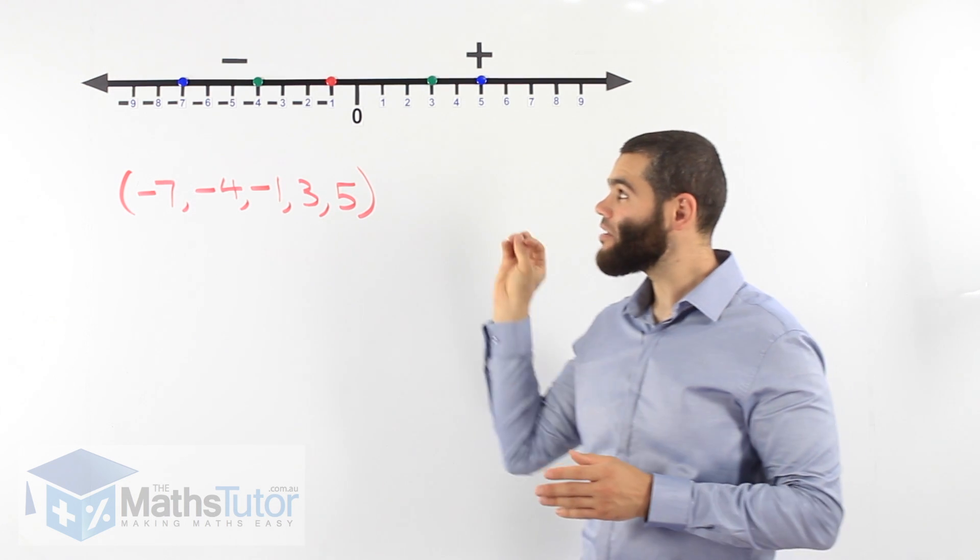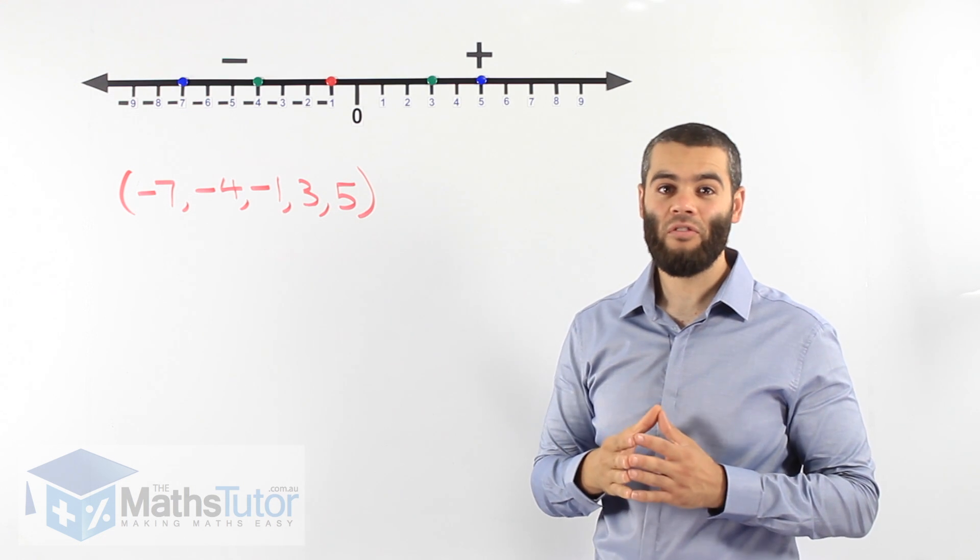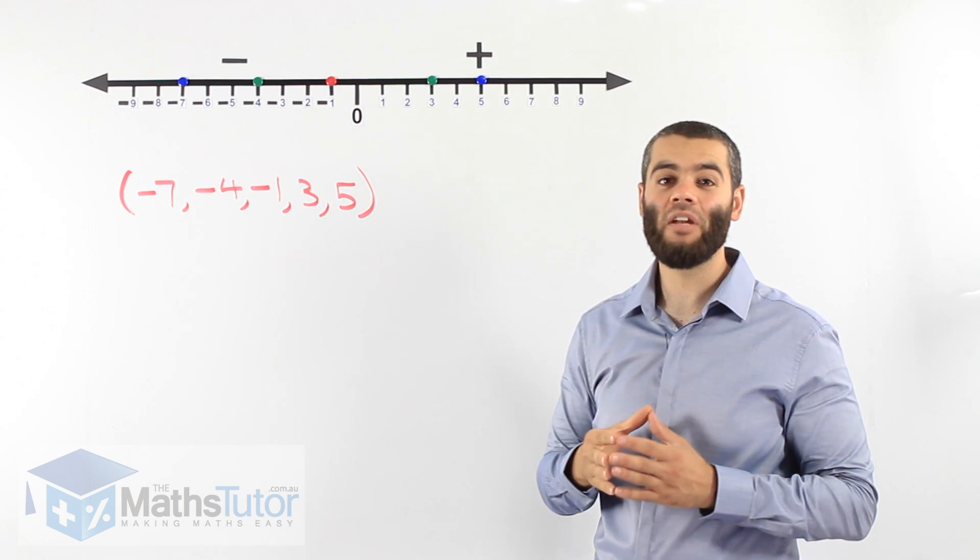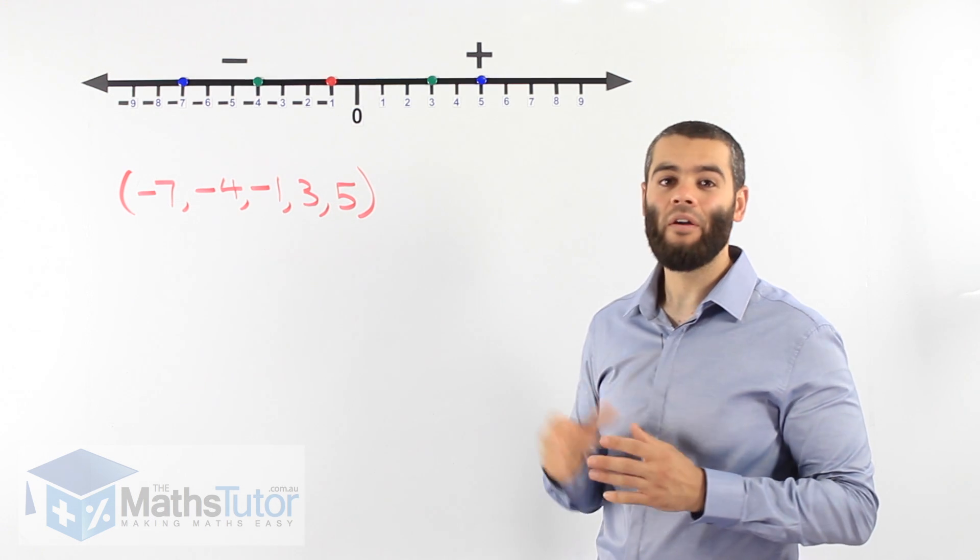So this is the number line. It's basic. Positives on the right, negatives on the left. In the future lessons we're going to see how we're going to use the number line to actually add or subtract negative or directed numbers.